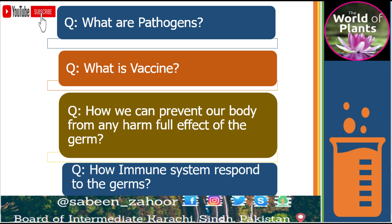To conclude: we have found answers to the questions raised at the start of this lecture — what are pathogens, how can we prevent our body from any harmful effect of germs, how does the immune system respond to germs, what is a vaccine, what is the function of a vaccine, and how can childhood diseases be prevented. We hope you understood today's lecture and have gotten all the answers to the questions.